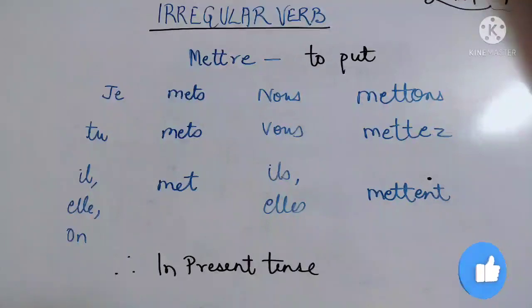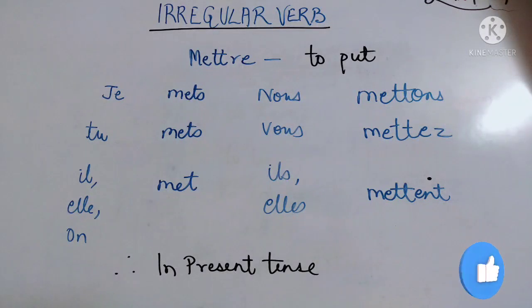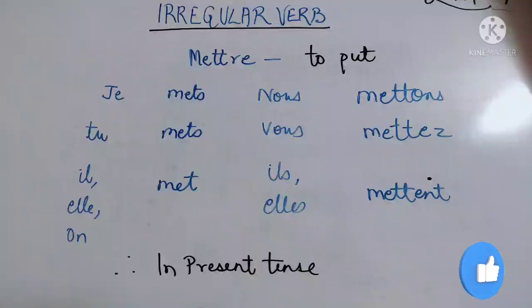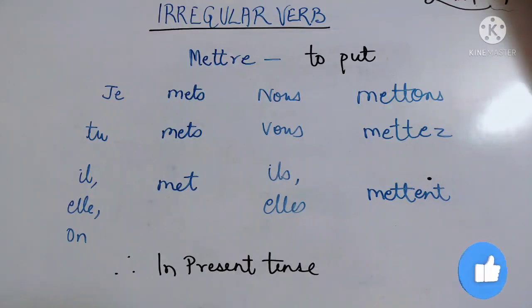'Nous mettons' — M-E double T-O-N-S — means 'we put'. 'Vous mettez' — M-E double T-E-Z. 'Ils mettent' — M-E double T-E-N-T.